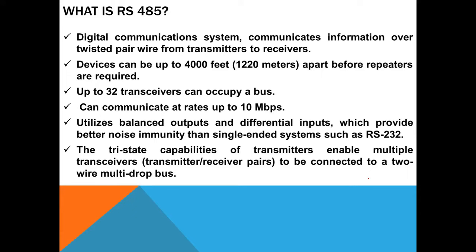There are a lot of benefits behind this module. The main points are: it provides a digital communication system that communicates information over twisted pair wire, and this twisted pair wire can go for a very long distance — up to one thousand meters, which is more than one kilometer. It can also support up to 32 transceivers, meaning more than 32 nodes. Beyond 32 nodes you may need a repeater. For now we talk about only two points — point-to-point.